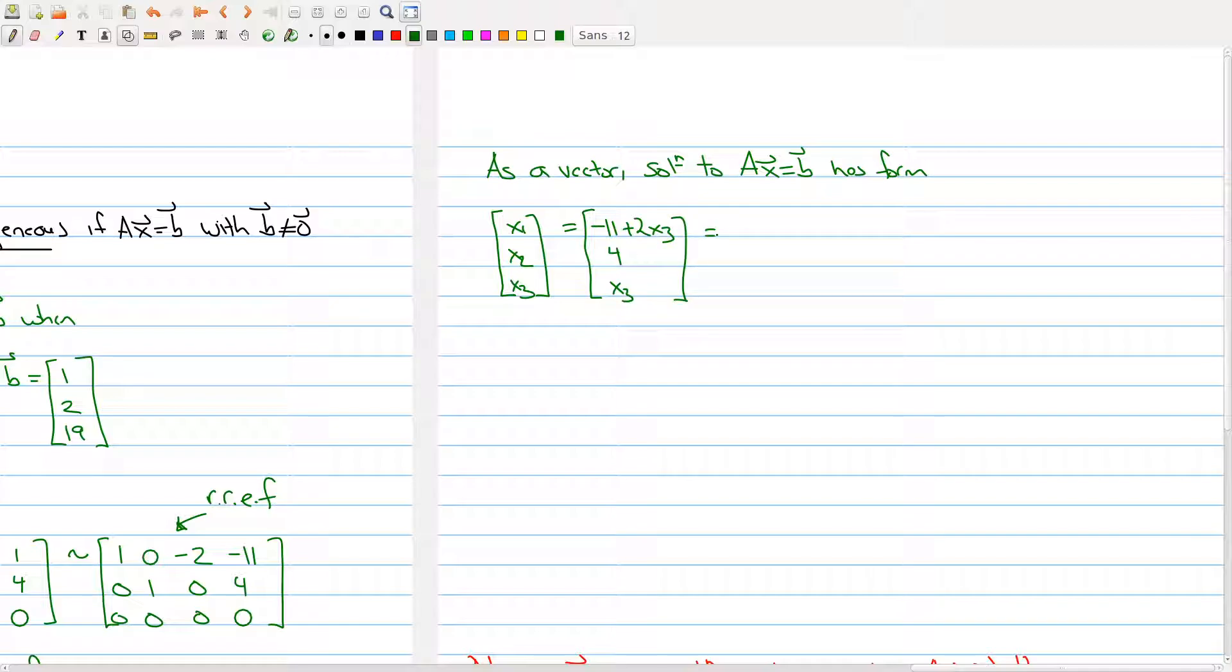Now what we want to do is take this vector and split it into parts. We want to split it into a vector that contains the free variable and a vector that doesn't contain any free variables. So we would have 2x3, no x3 in this coordinate, and x3 in this spot.